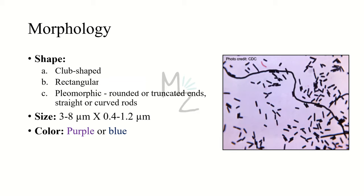Morphology. This bacterium is club-shaped and a rectangular rod. It is pleomorphic — the word 'pleo' means many and 'morphic' is from morph, meaning shapes. So this bacterium exists in many shapes, like it might have rounded or truncated ends. It may be a straight or curved rod. It varies in size from 3 to 8 micrometers by 0.4 to 1.2 micrometers. It is purple or blue in color because it is a gram-positive bacterium.